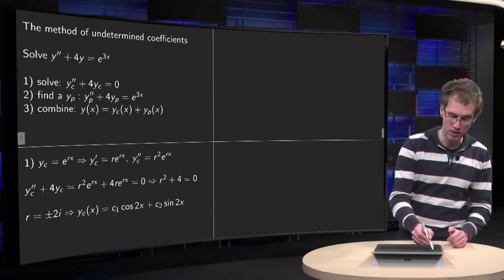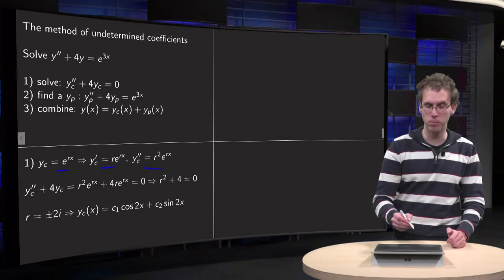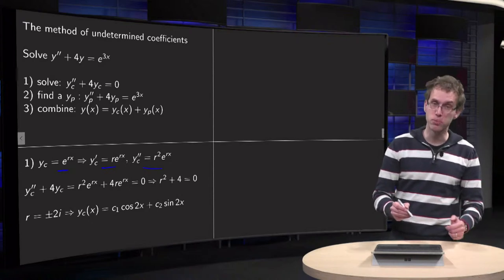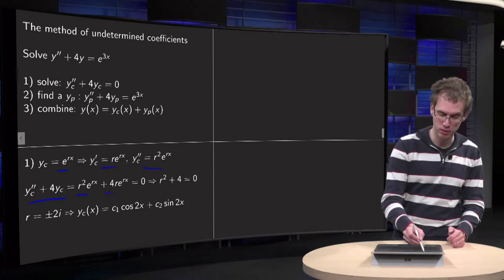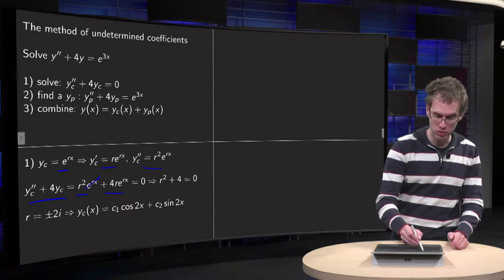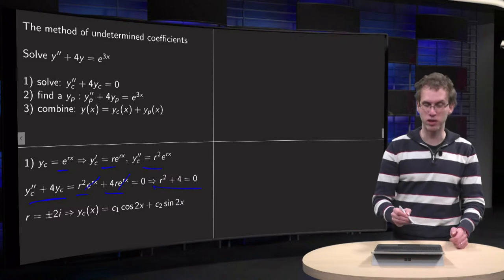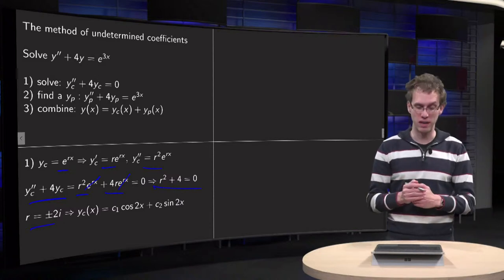We set yc = e^(rx), compute yc prime and yc double, substitute this into the complementary equation, so you get r² e^(rx) + 4r e^(rx) = 0. Those two cancel out, so you get r² + 4 = 0. So r = ±2i. You know how to solve that then.